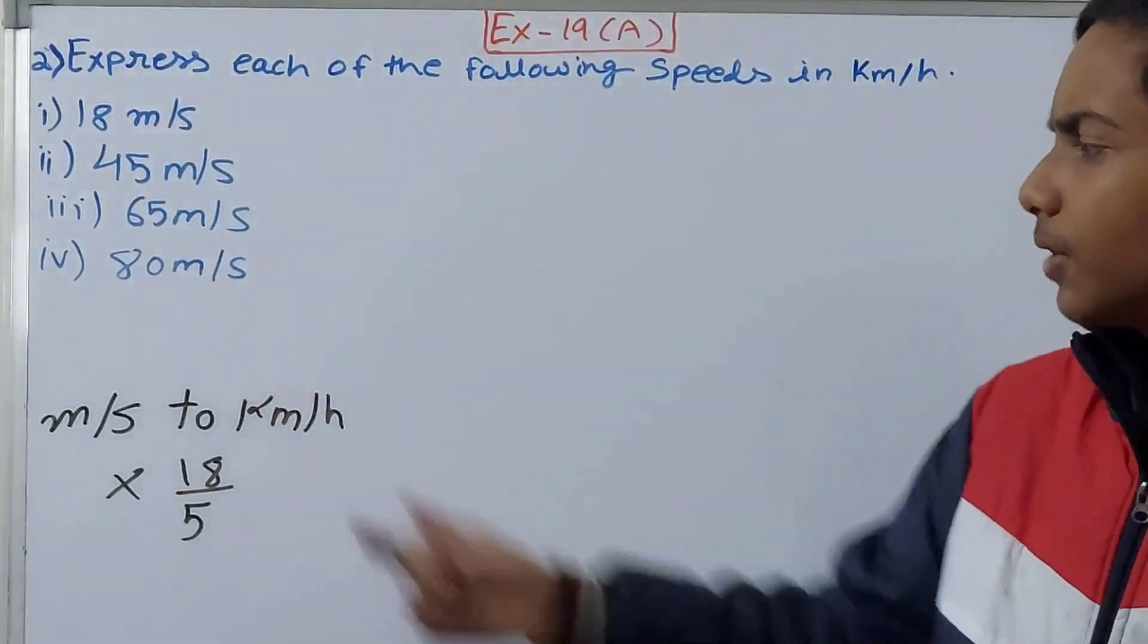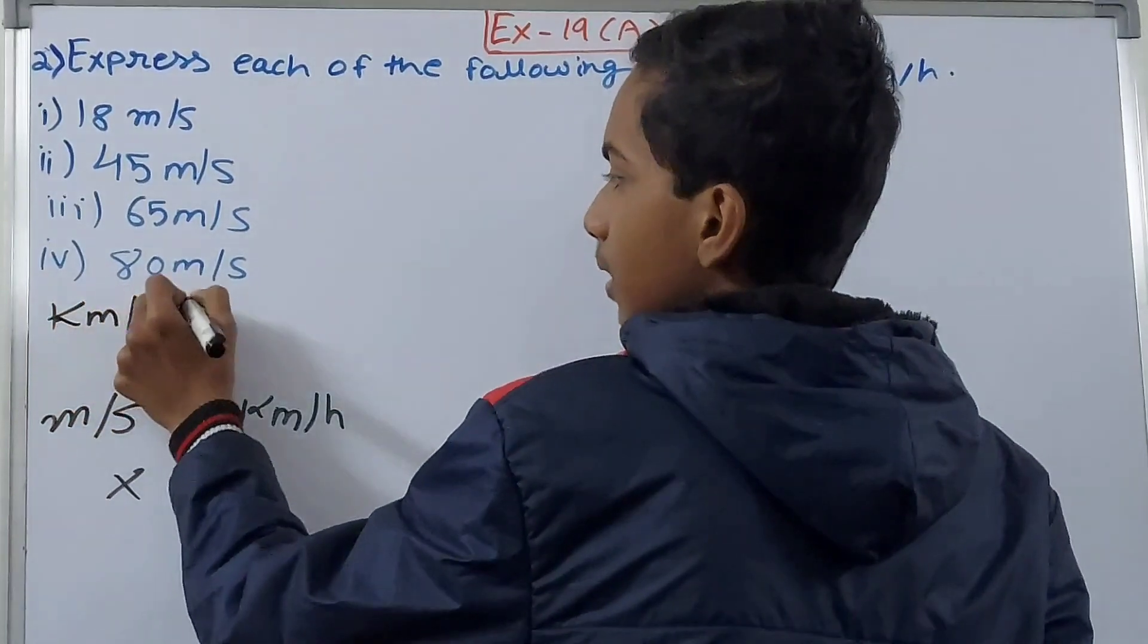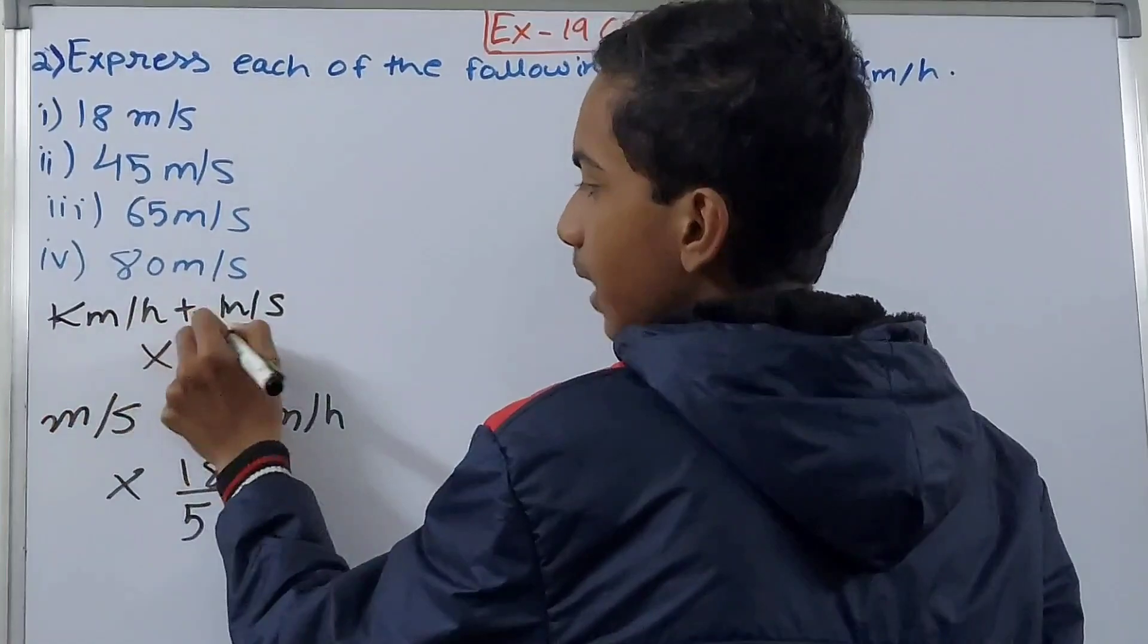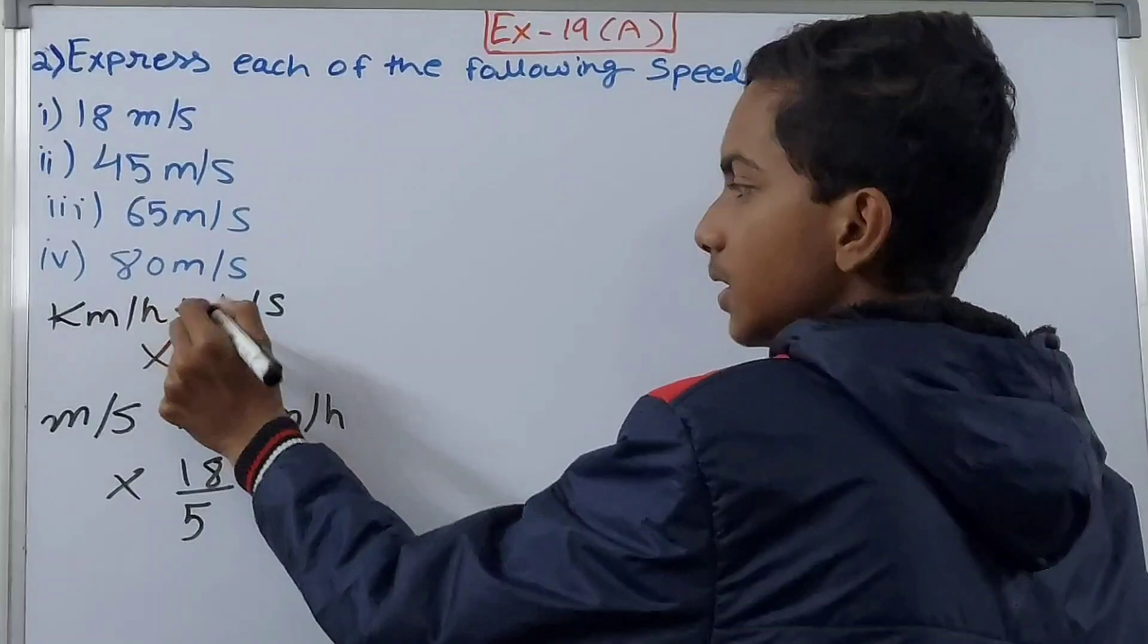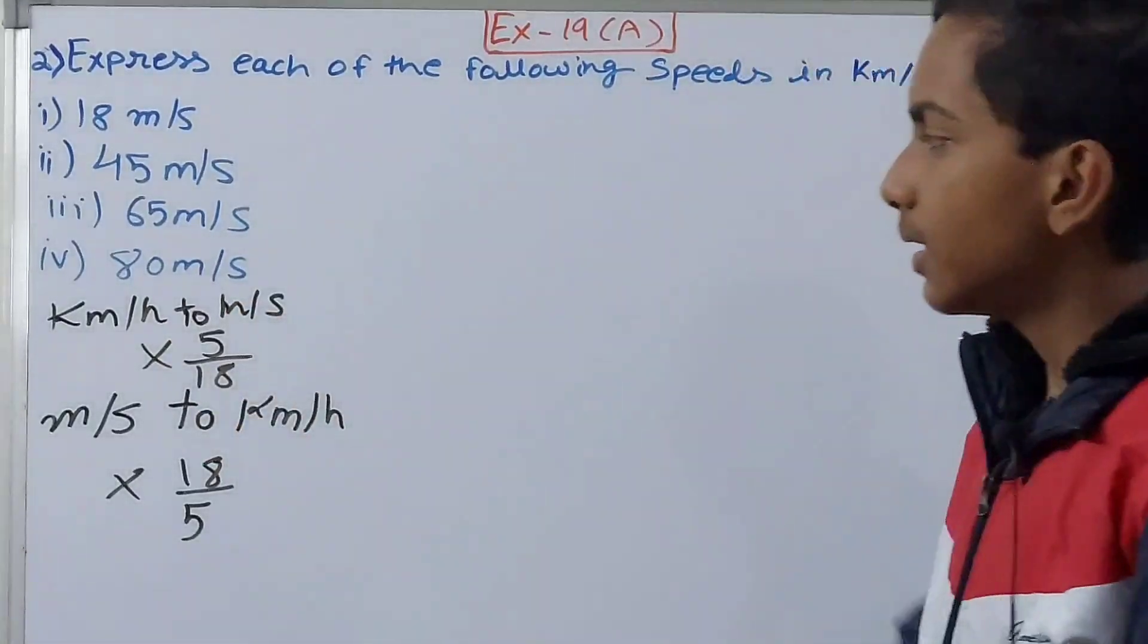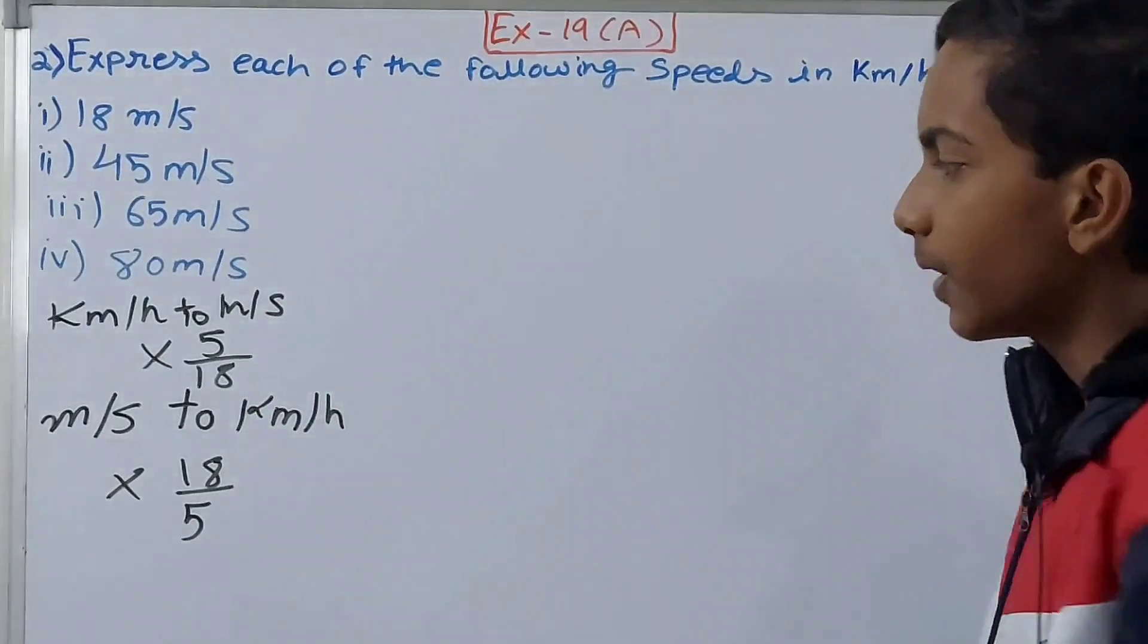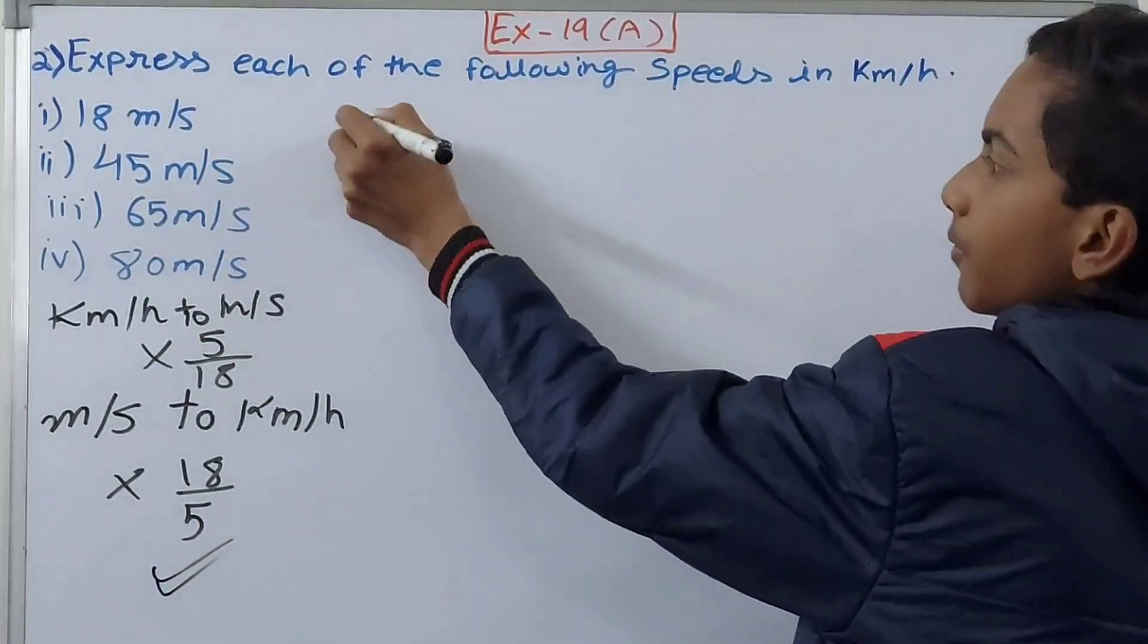Let me write this down. Kilometers per hour to meters per second is multiplied by 5/18. When you change the units, the value changes as well - basically reciprocate the fraction. So 5/18 becomes 18/5. We will multiply by 18/5. First up we have 18 meters per second.